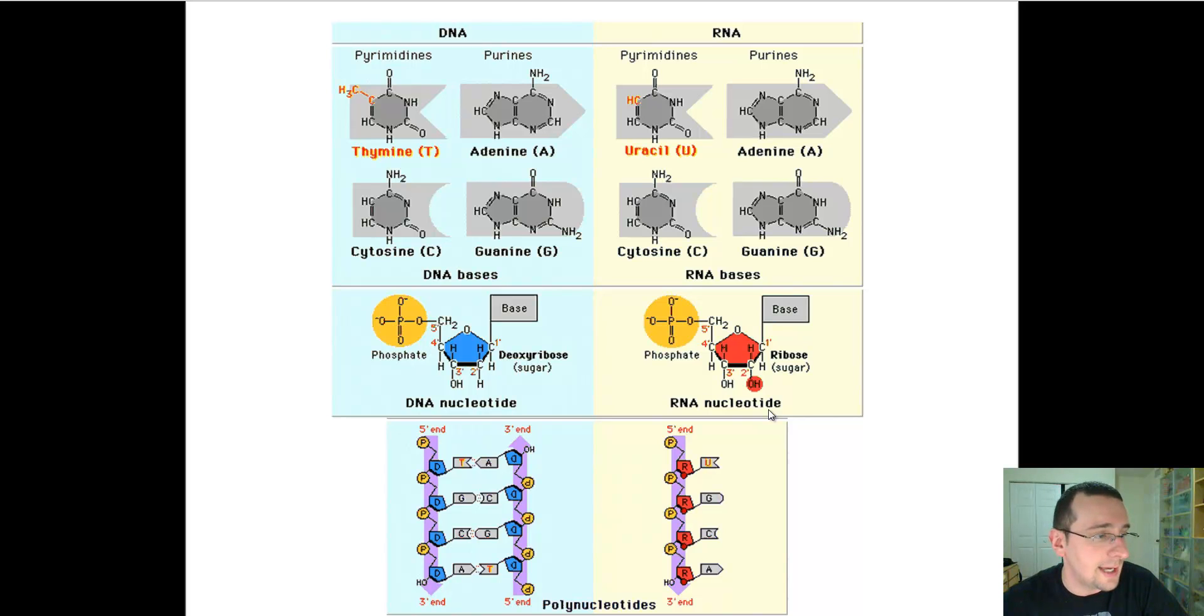DNA has adenine, thymine, cytosine, and guanine as their components. RNA has uracil, adenine, cytosine, and guanine.